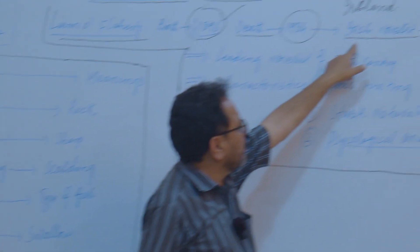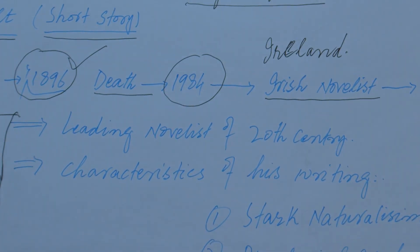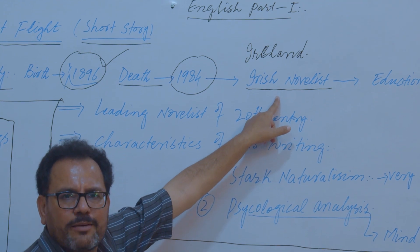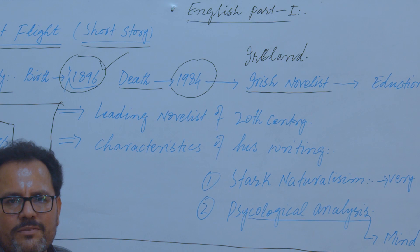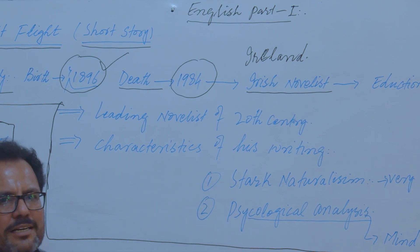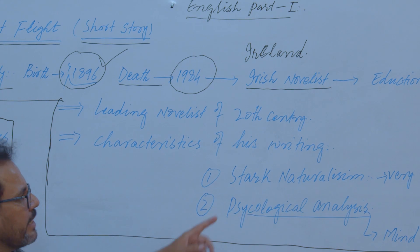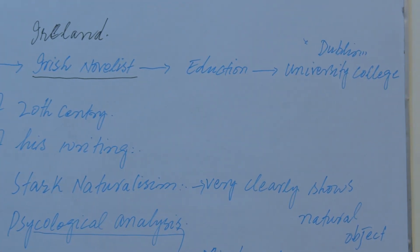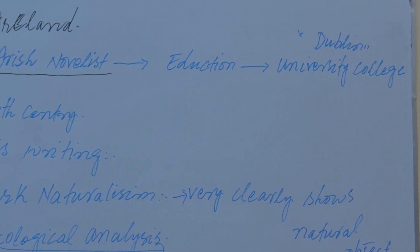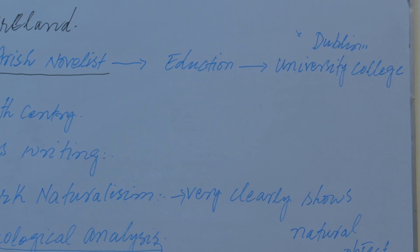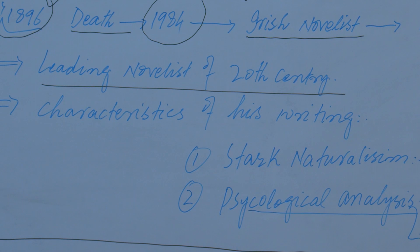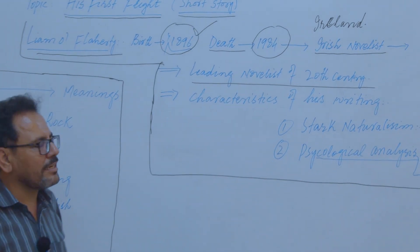His writing is basically that of a novelist — meaning he is a novel writer and a short story writer. He received his education at University College Dublin. He is considered a leading novelist of the twentieth century and was a very well-known, extremely famous novelist of the twentieth century.